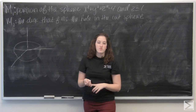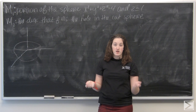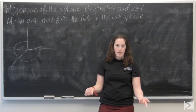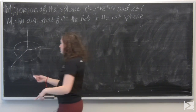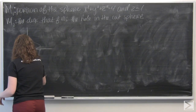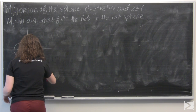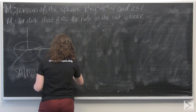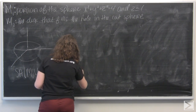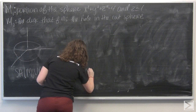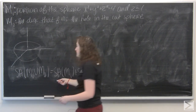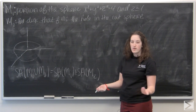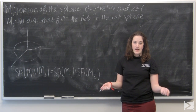We know that for piecewise regular surfaces, the surface area of the union of two surfaces is just the surface area of each of them added together. So basically we're going to calculate the surface area of each region and then add them together.